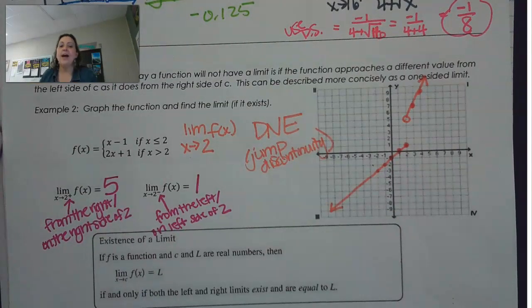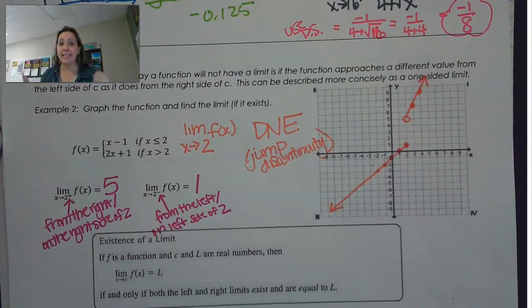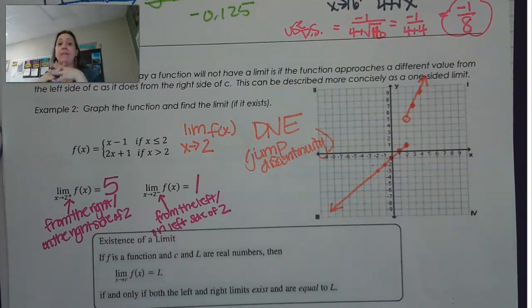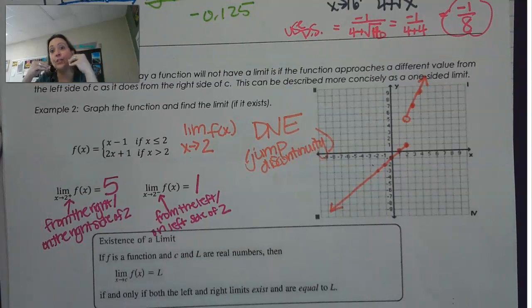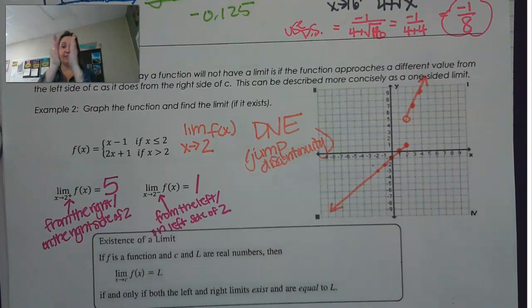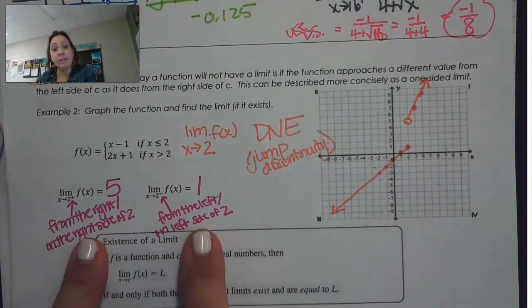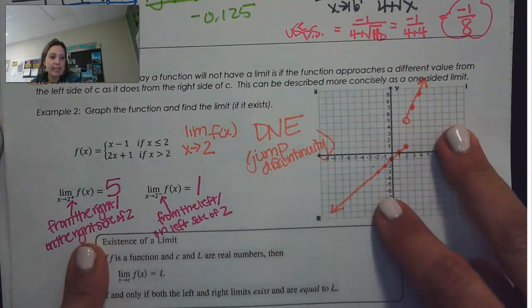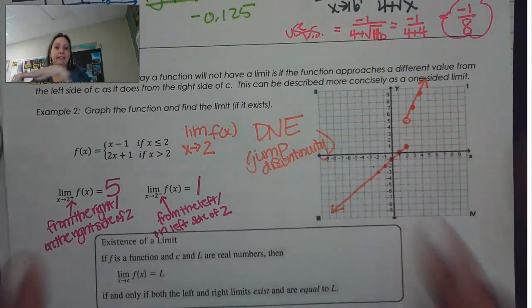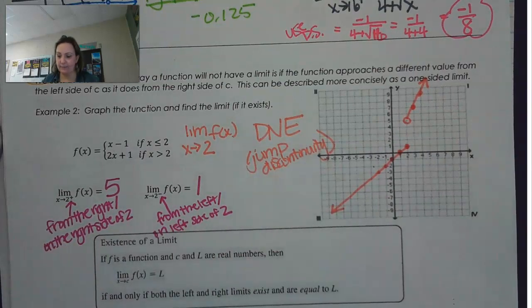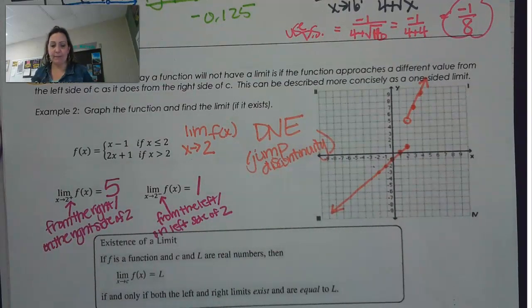So these are one-sided limits. Before we said that in order to have a limit they had to match — that's true if we're taking the limit at a specific value. But if we have a one-sided limit and something like a jump discontinuity, then they can exist.